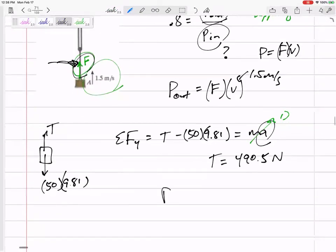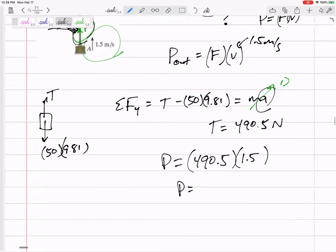So the power that's happening, what's really going on, we've got a 490.5 tension that's pulling at 1.5 meters per second. This power, if I kept it with my units, a newton meter per second is a watt. 735.75 watts.